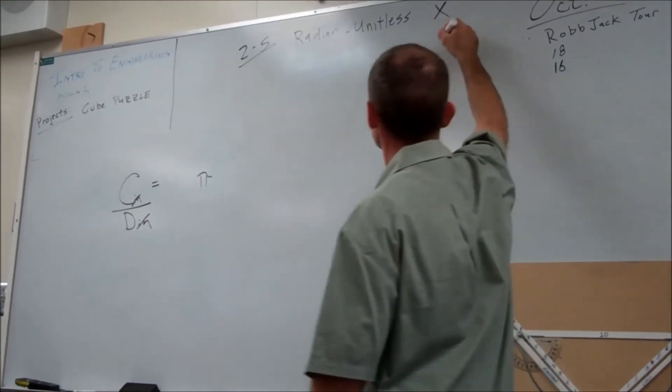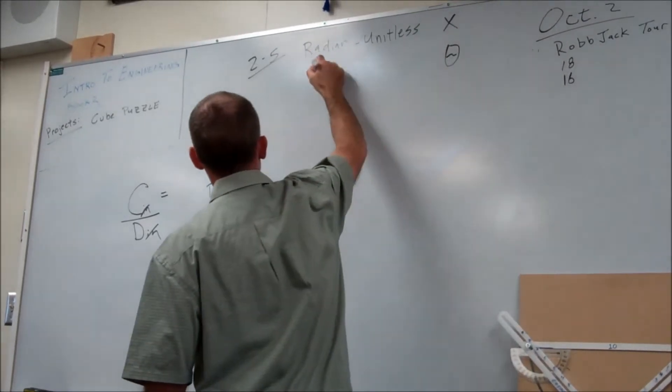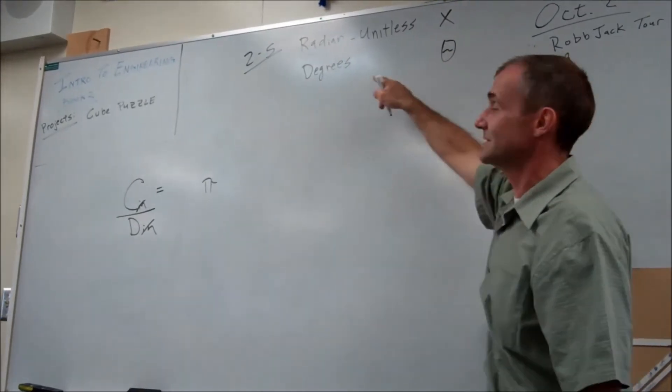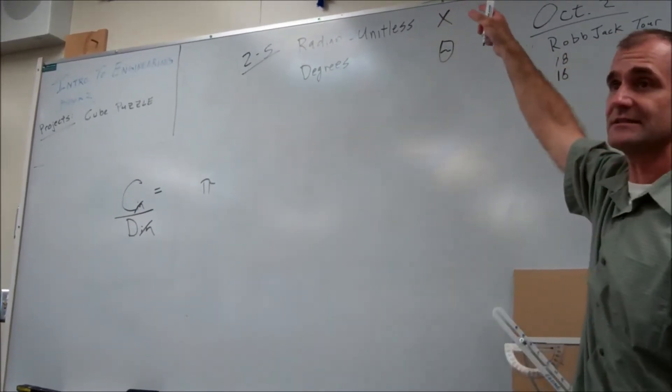The notation for radians is always the independent variable x versus the Greek letter theta. Theta means degrees, and degrees are a unit. So if you see a theta, the problem is in degrees. If you see an x, it's an independent variable.